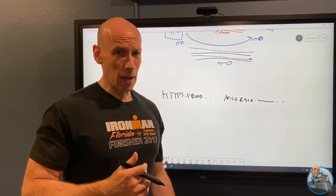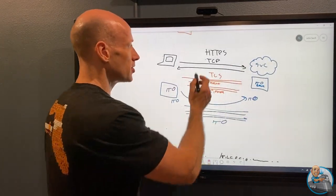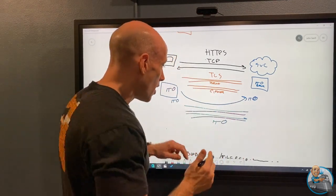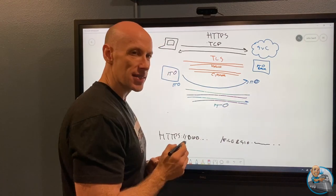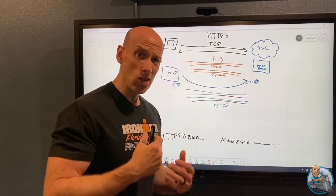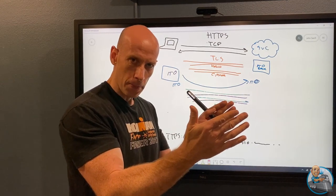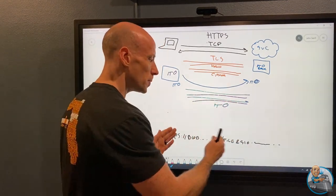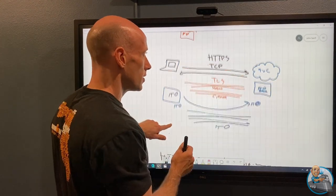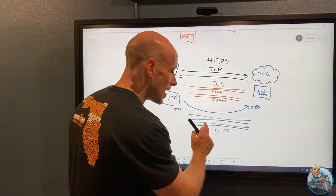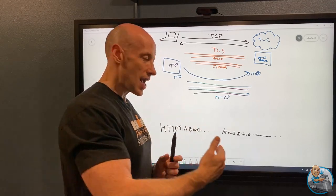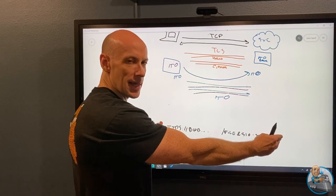That DNS lookup is really the only bit that's public. I then establish a TCP session to that target, then establish the TLS session to that target. And then over this encrypted session, I make the request — that's when I send the file I want and the signature. The signature in the shared access signature is not sent plain text over the internet, even though it's part of the URL. It's sent inside the encrypted payload.